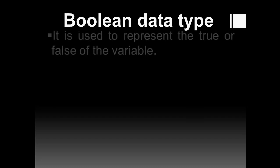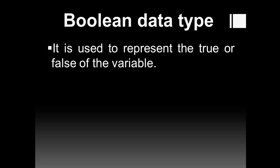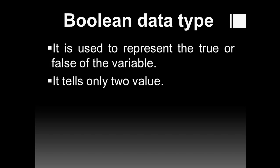The first is a boolean data type. What is the meaning of boolean? Boolean means yes or no, 0 or 1, true or false. Boolean basically works on only two values. It is used to represent the condition — true or false — of the variable. Boolean joh hai basically true or false ki condition ko batane mein humari help karta hai. It tells only two values: true or false.